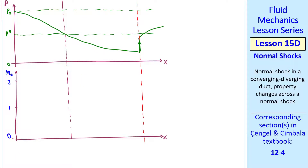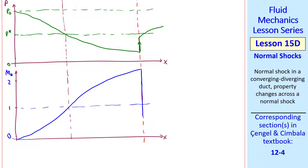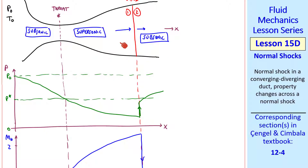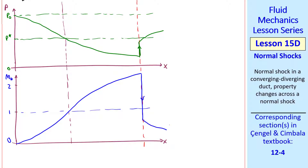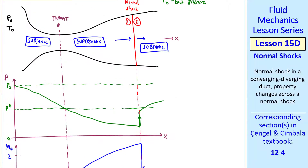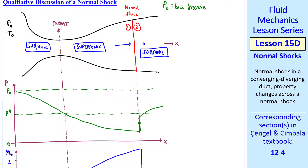Similarly, let's plot Mach number as a function of x. Mach number starts at zero in the tank, reaches one at the throat, and then keeps increasing up to the shock. Across the shock, the Mach number must go below one, since the shock always goes from supersonic to subsonic flow. Downstream of the shock, Mach number decreases, since again this is a subsonic diffuser — decreasing speed and Mach number, and increasing pressure.